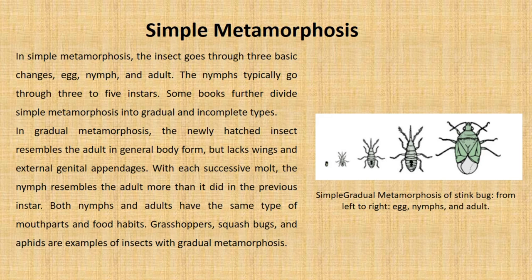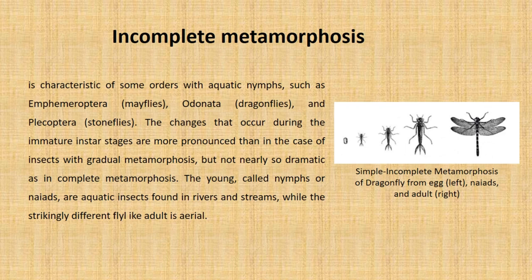Incomplete metamorphosis is characteristic of some orders with aquatic nymphs, such as Ephemeroptera (mayflies), Odonata (dragonflies), and Plecoptera (stoneflies). The changes that occur during the immature instar stages are more pronounced than in the case of insects with gradual metamorphosis, but not nearly so dramatic as in complete metamorphosis. The young, called nymphs or naiads, are aquatic insects found in rivers and streams, while the strikingly different fly-like adult is aerial.